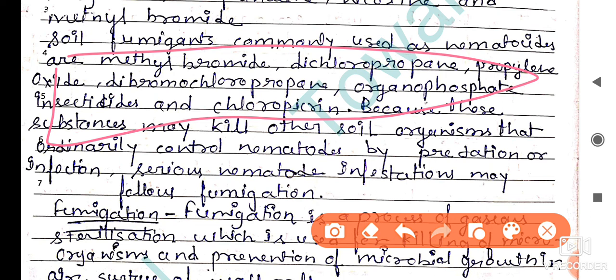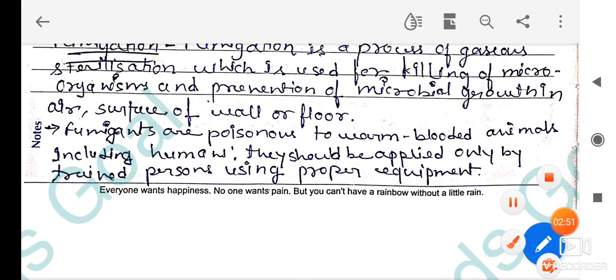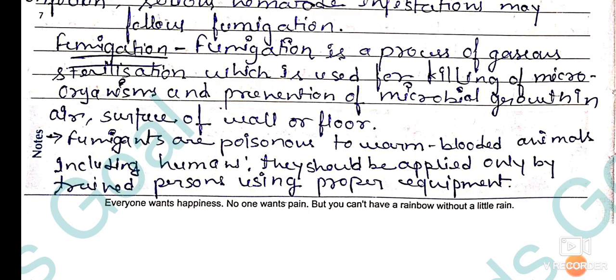So what is fumigation? Fumigation is a process of gaseous sterilization which is used for killing microorganisms and prevention of microbial growth in air, surfaces, walls, or floors. Fumigants are poisonous to warm-blooded animals including humans, and should be applied only by trained persons using proper equipment.